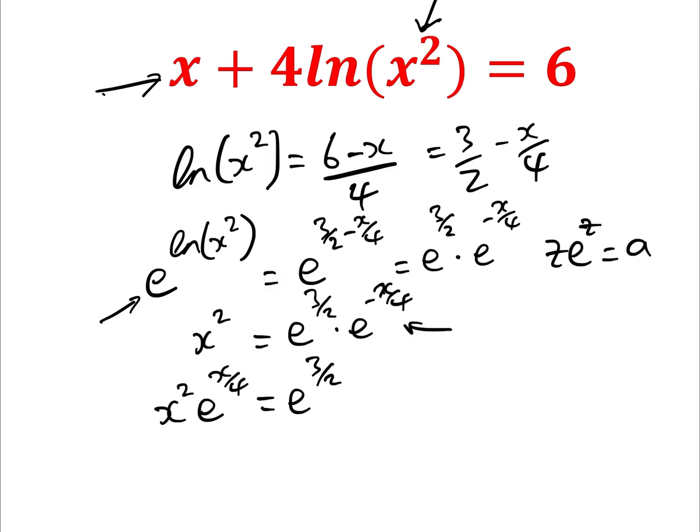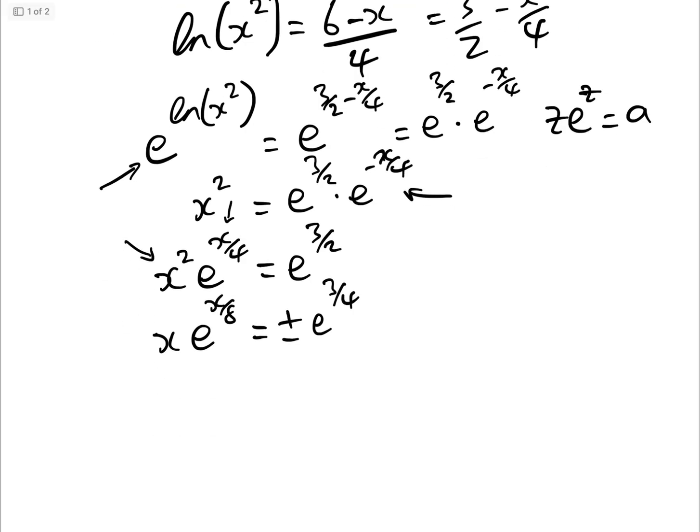Now what we're going to do is we're going to take the square root in order to get the x squared and the x's the same. So we're going to have x e, well, the square root of e to the x over 4 is e to the x over 8 equals plus or minus, that's quite important, e to the 3 quarters.